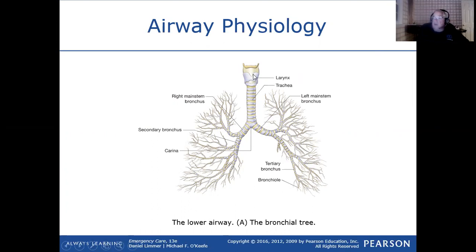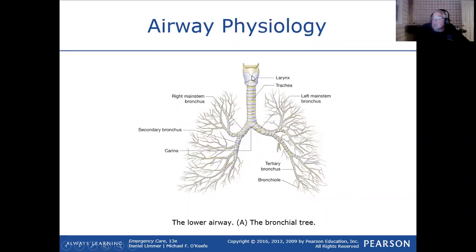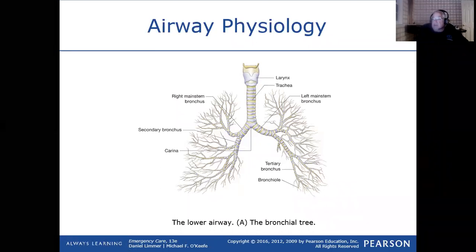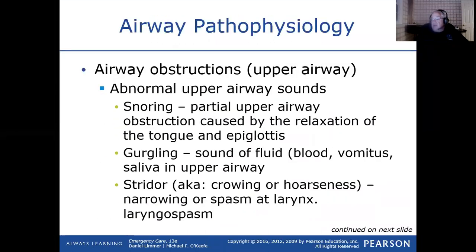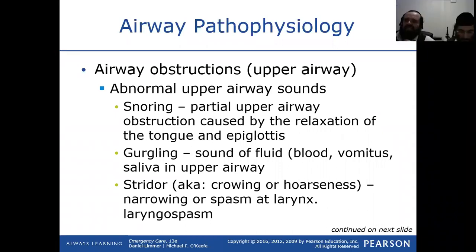A cough is a protective mechanism to clear the airway. The larynx has the ability to spasm or narrow. When that happens, the sound produced is called stridor — sometimes abbreviated as a crowing sound, or the voice becomes very hoarse. Stridor is typically an inspiratory sound, very prolonged and loud — you can't miss it. It's caused by laryngeal spasm.